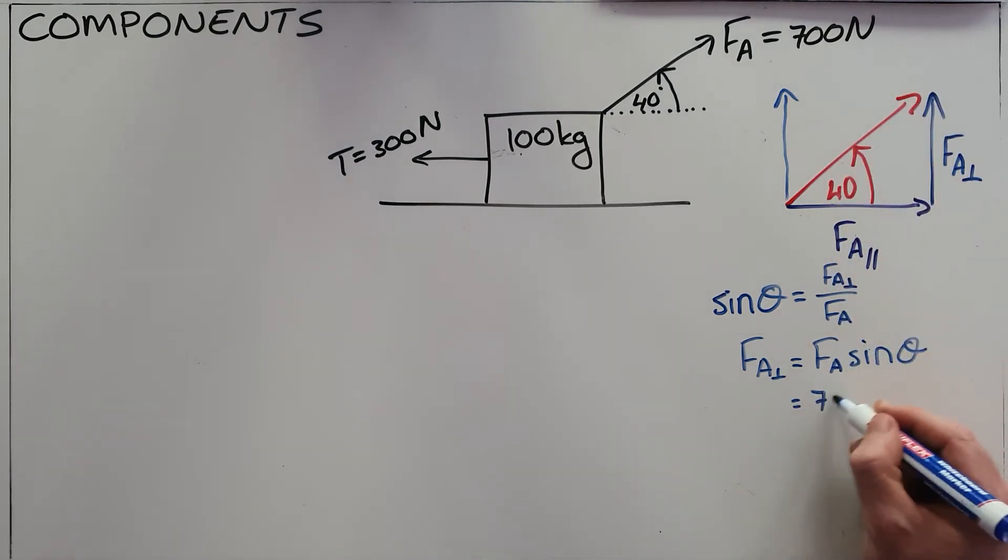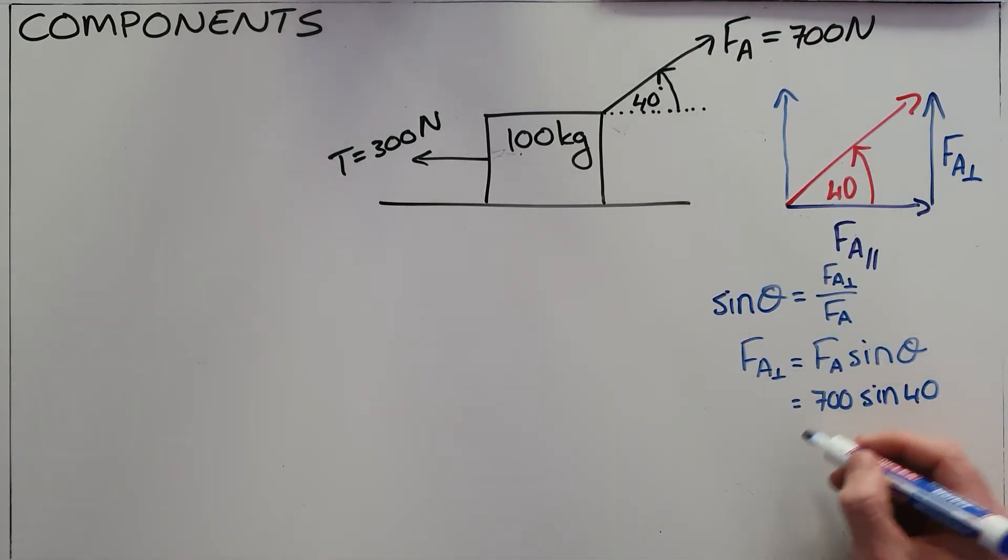F_A was given as 700 newtons and theta was given as 40 degrees, which means that the component of A that is lifting this object upward is 449.95 newtons, and that is an upward force.